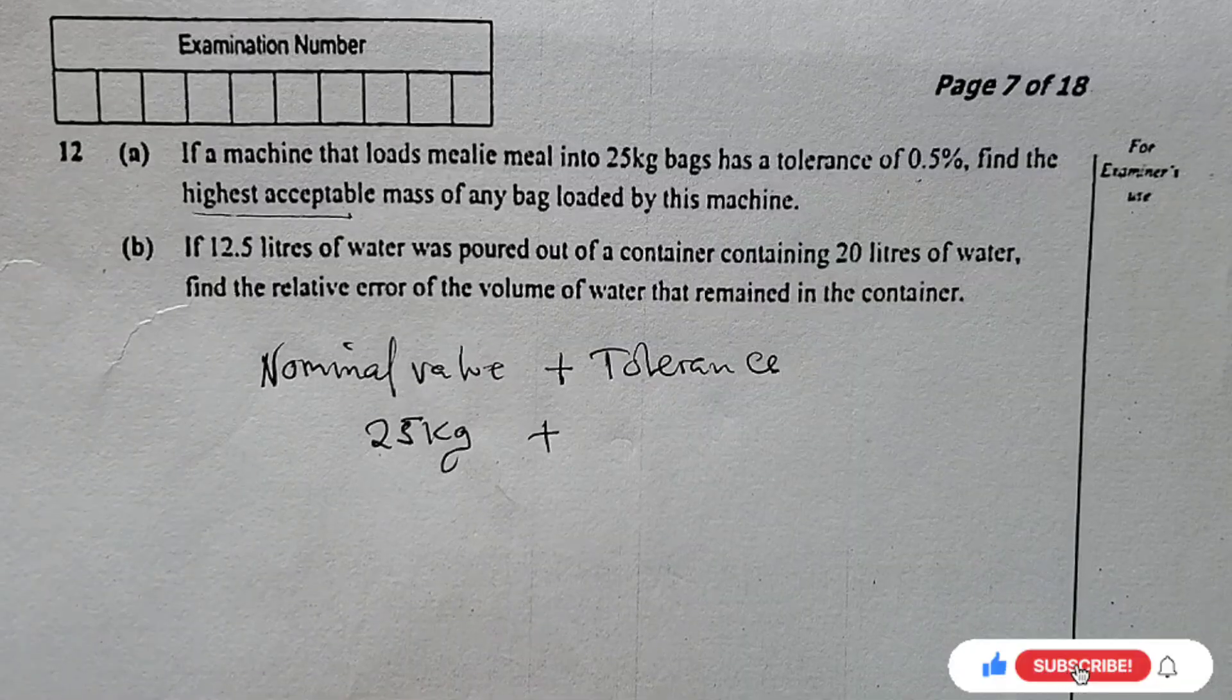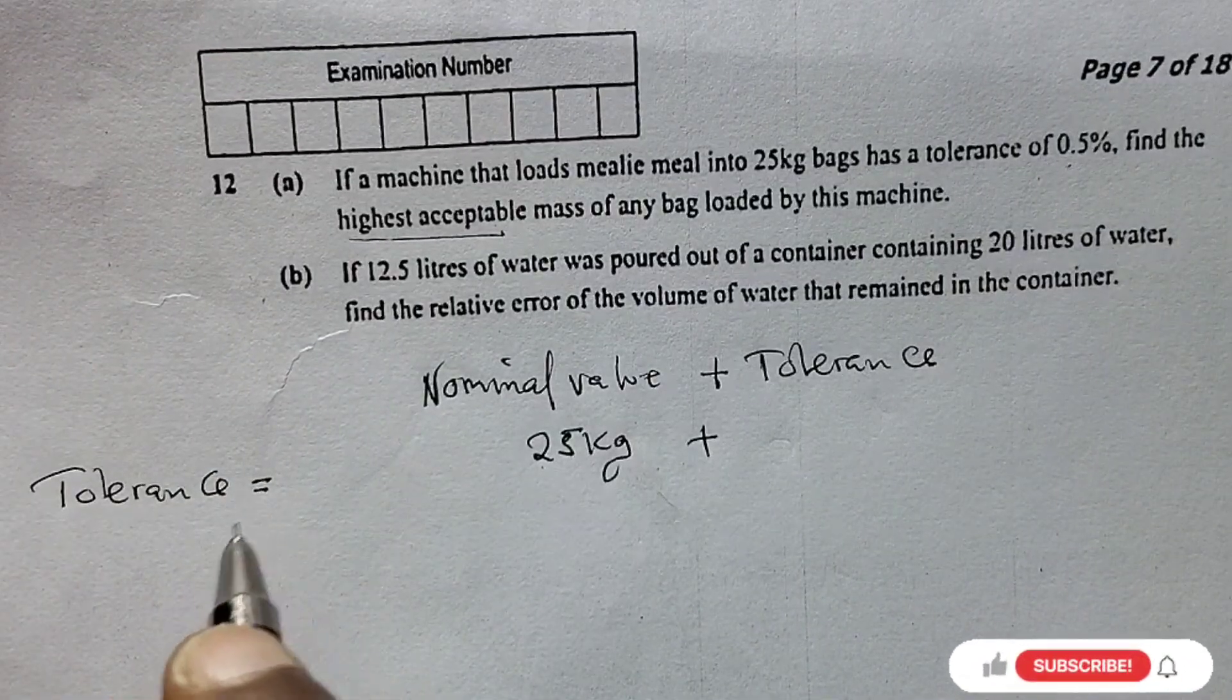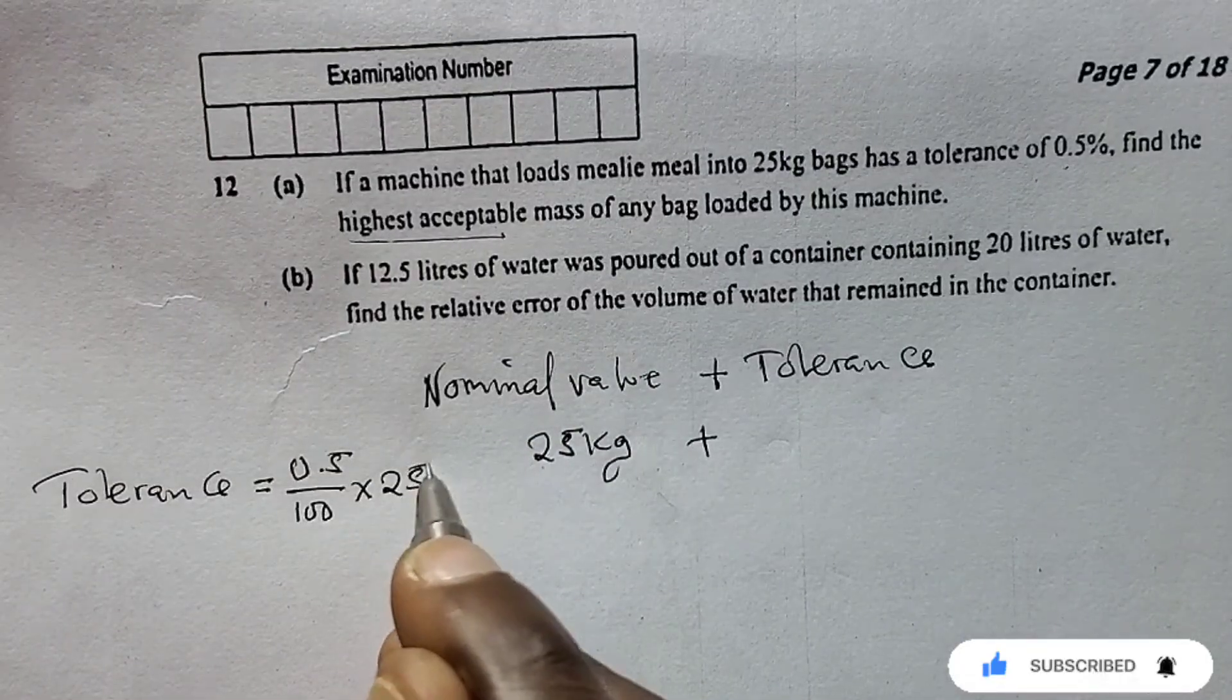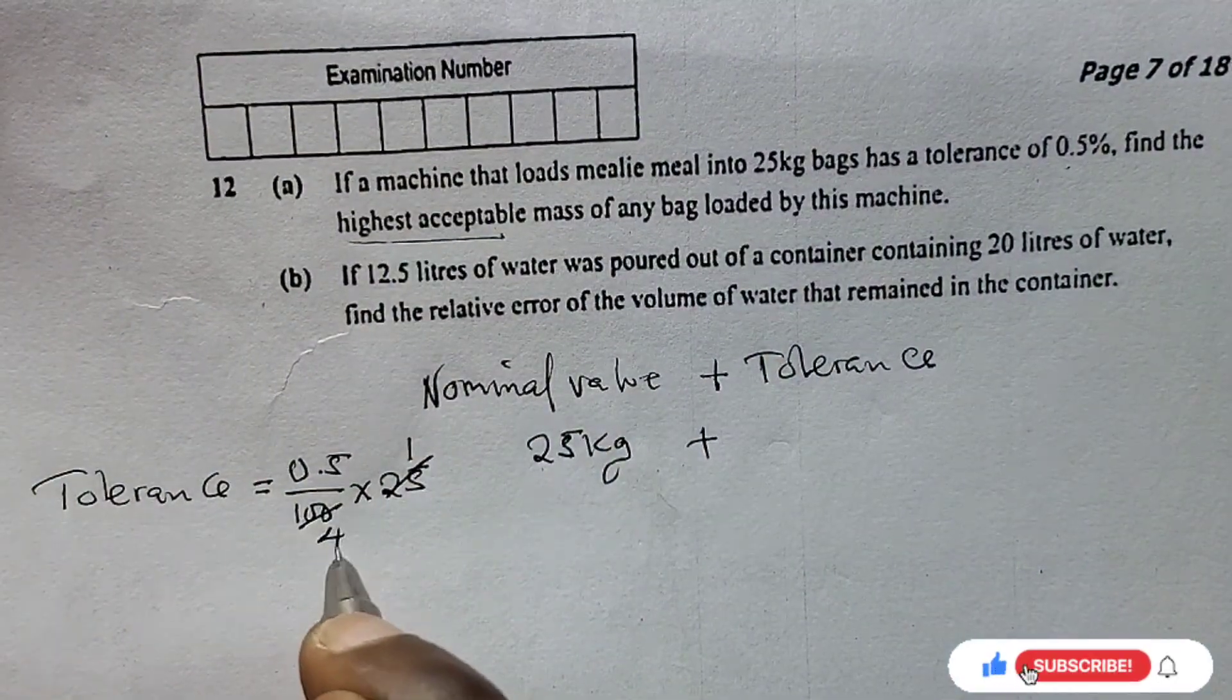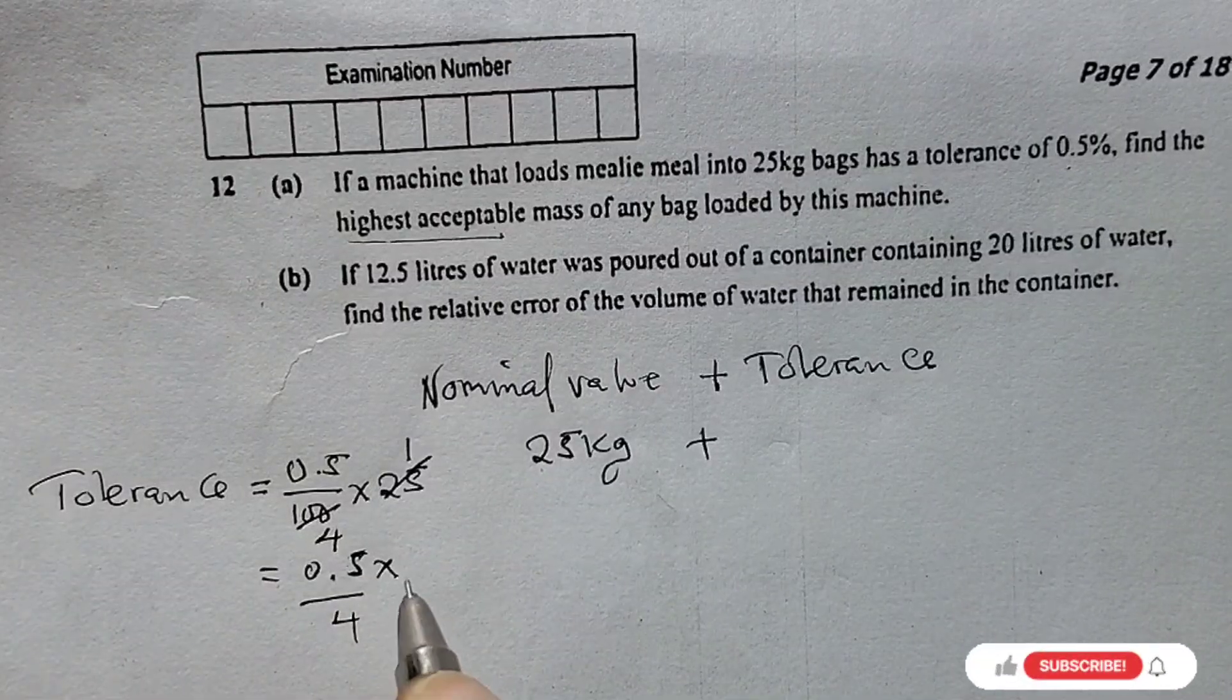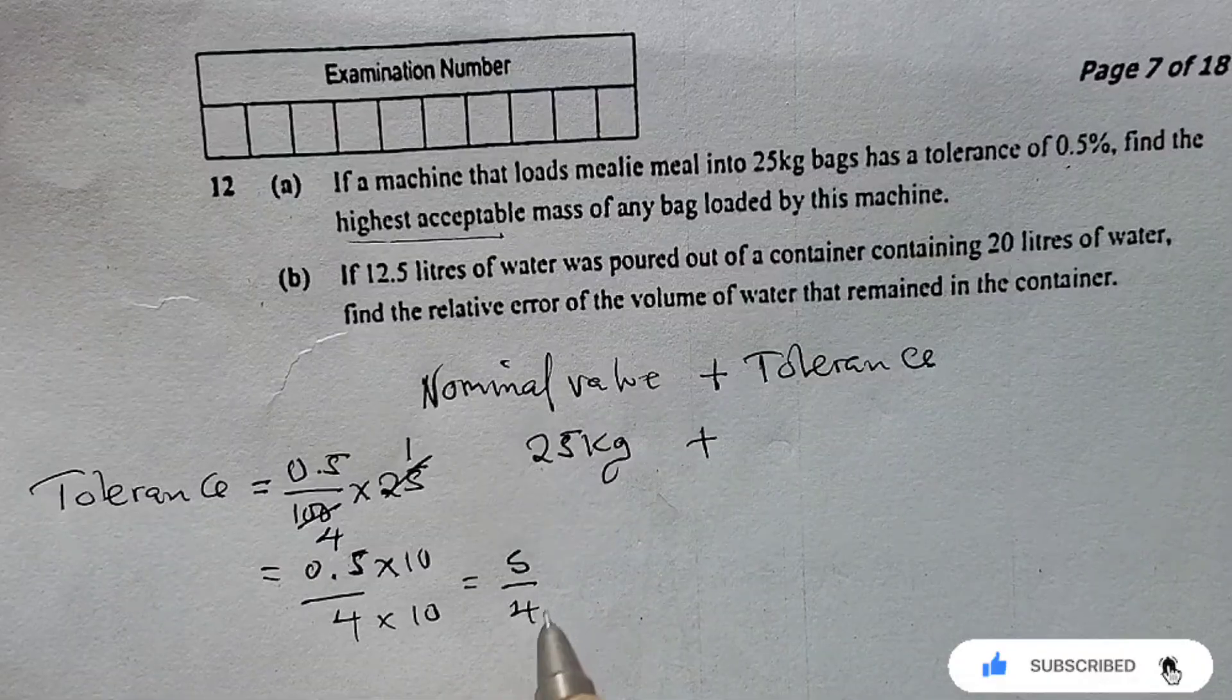We're going to calculate tolerance in kg. So we say 0.5 divided by 100 of the nominal value, which is 25. So 0.5 over 100 times 25. We have 0.5 over 4, then multiply both sides by 10 since this one has one decimal place, and on top we remain with 5, down we remain with 40.